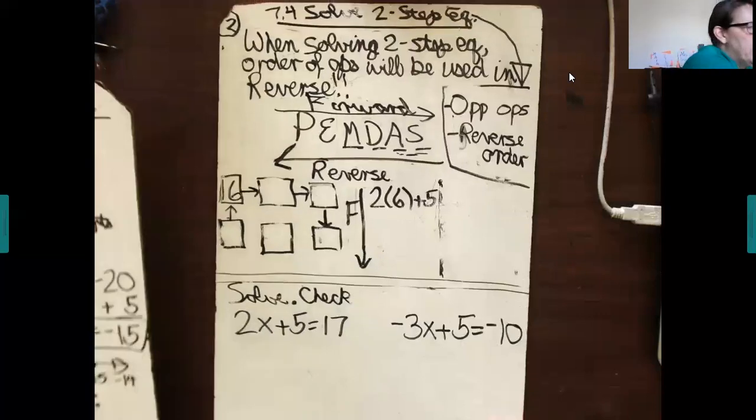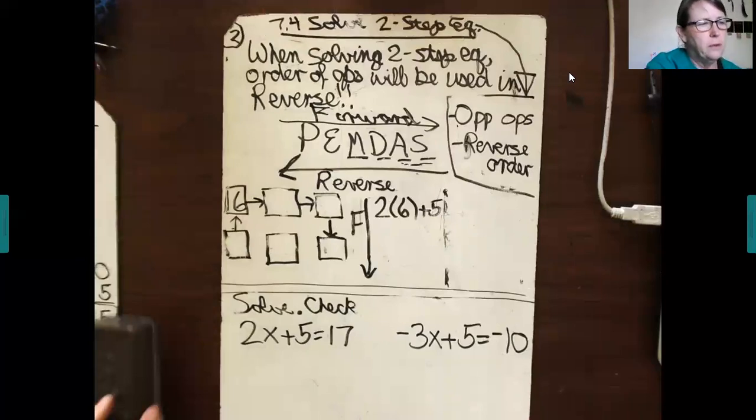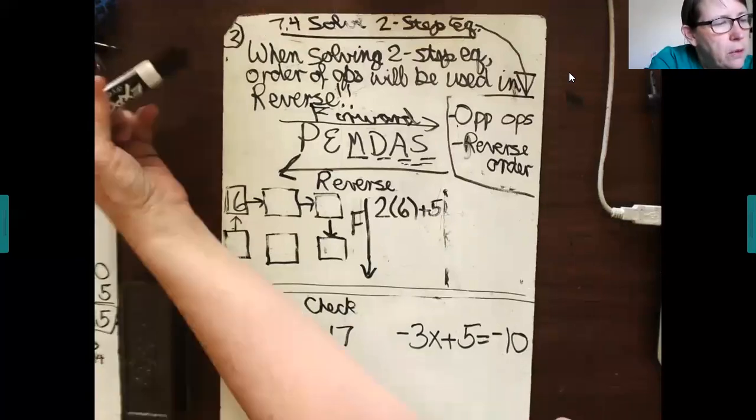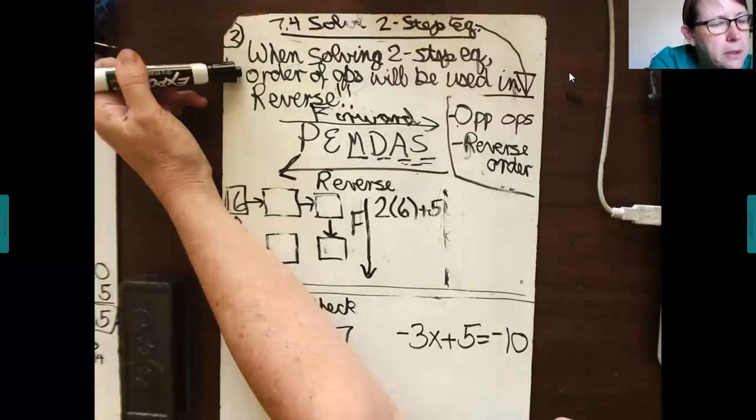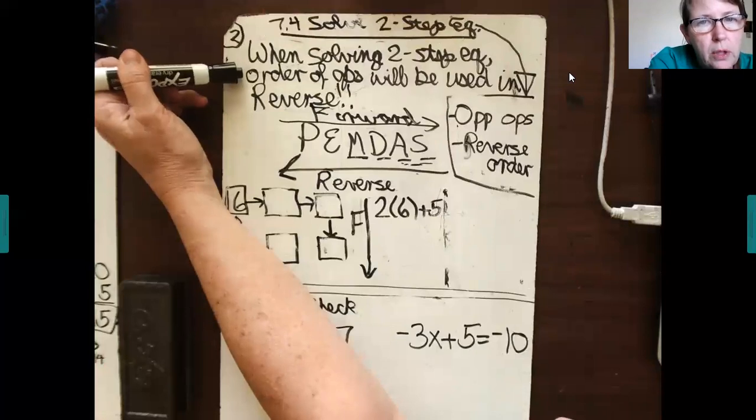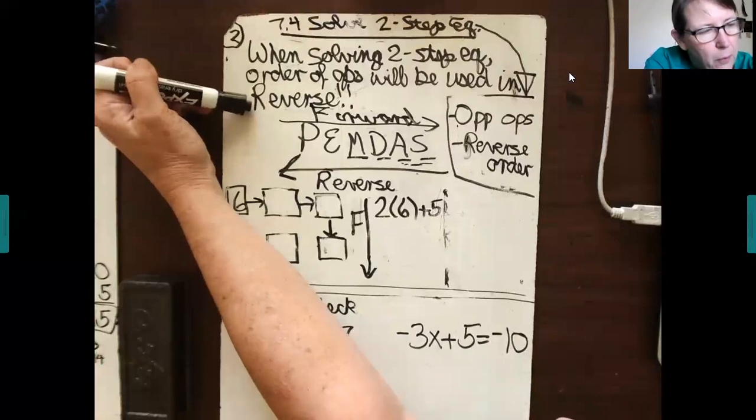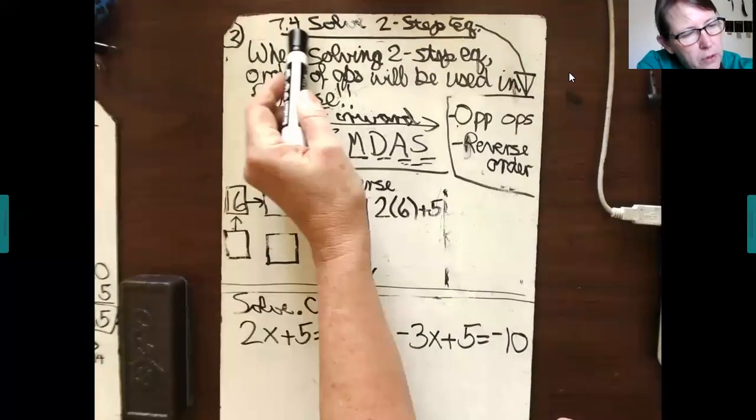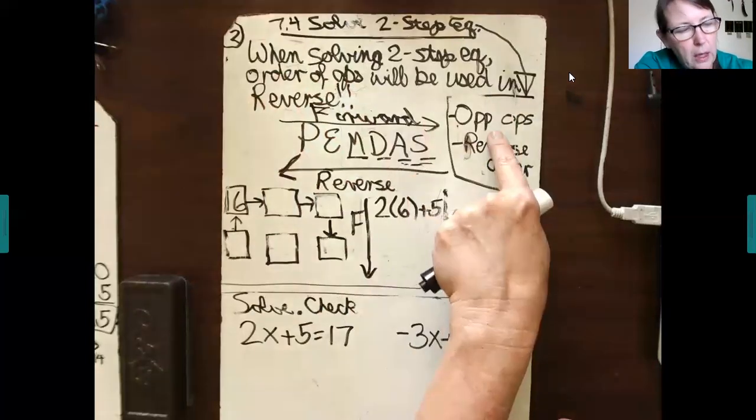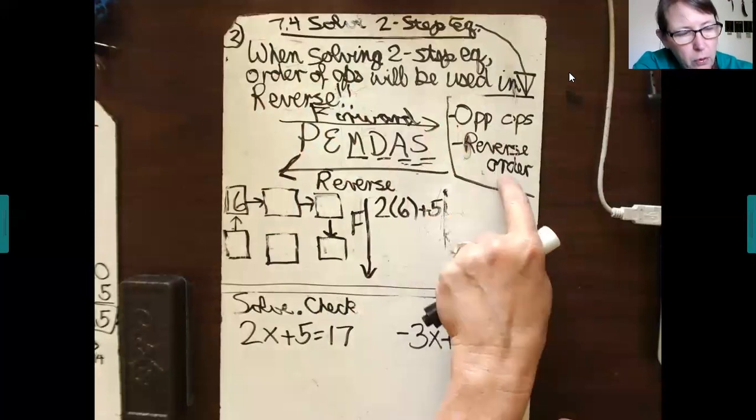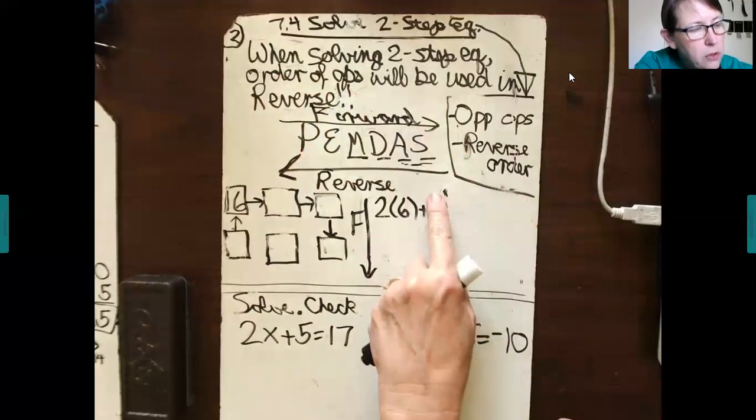Okay, all right. Here is the second page of solving a two-step equation. Writing this sentence down. When solving two-step equation, order of ops or order of operations will be used in reverse. Okay, what does that mean? Watch. Solving two-step equations, you will be performing the opposite operations in reverse order. That reverse order means the reverse order of the operations. Let's try it out.